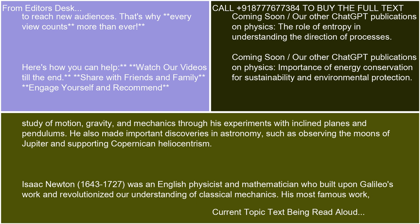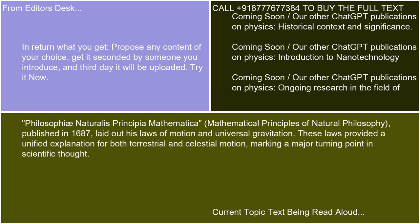Isaac Newton (1643 to 1727) was an English physicist and mathematician who built upon Galileo's work and revolutionized our understanding of classical mechanics. His most famous work, Philosophiae Naturalis Principia Mathematica (Mathematical Principles of Natural Philosophy), published in 1687, laid out his laws of motion and universal gravitation. These laws provided a unified explanation for both terrestrial and celestial motion, marking a major turning point in scientific thought.